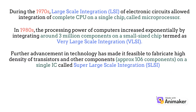To summarize the evolution of computer: in the 1970s, large-scale integration (LSI) allowed integration of a complete CPU on a single chip called a microprocessor. Later, in the 1980s, the processing power of computers increased exponentially by integrating around 3 million components on a small-sized chip, termed as very large-scale integration (VLSI).